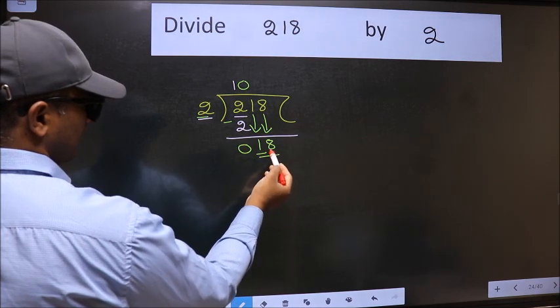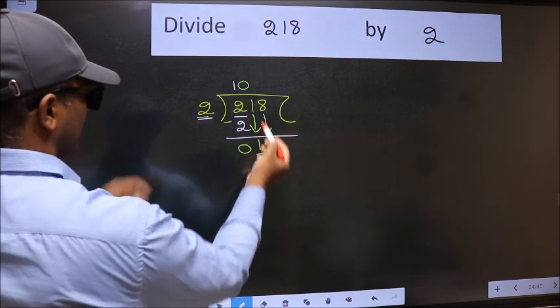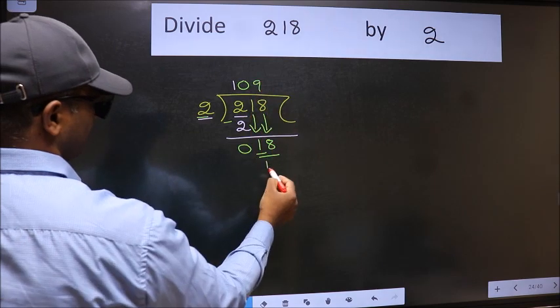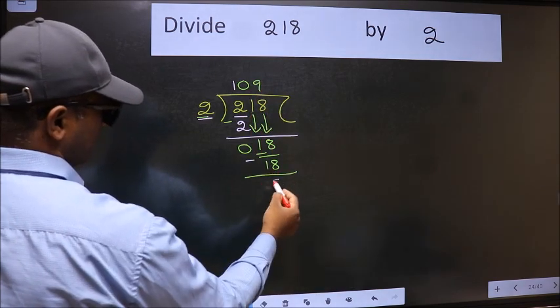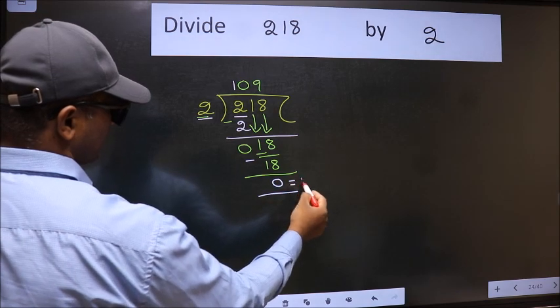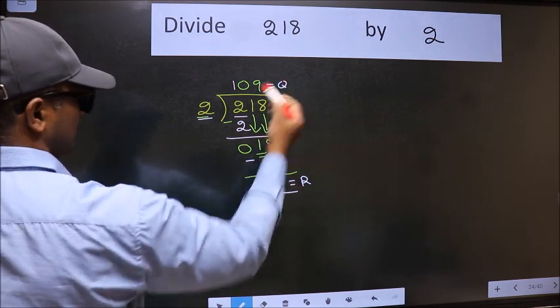Now 18. When do we get 18 in 2 table? 2 9s, 18. Now we should subtract. We get 0. This is our remainder and this is our quotient.